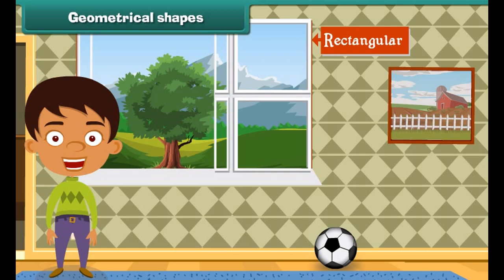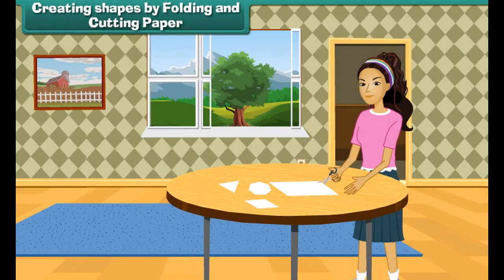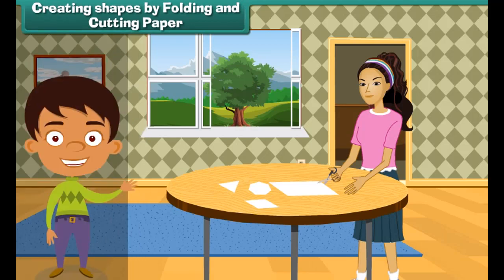Look at the window of your room, it is rectangular in shape. The design on the tiles is triangle. Look at the ball lying in the room, its shape is spherical. Now look at the frames of the painting hanging on the wall, it is square in shape. Now you have seen and learned different objects with different shapes.